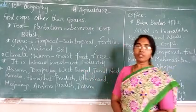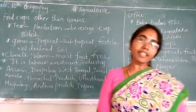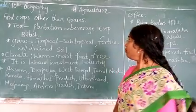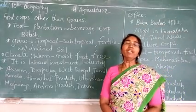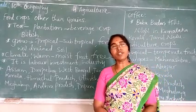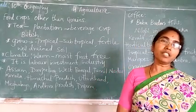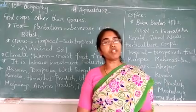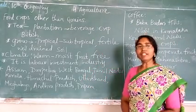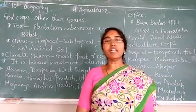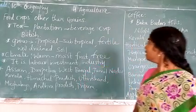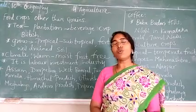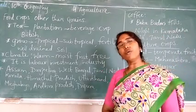Tea is known as a plantation crop as well as a beverage crop. It was introduced by the British in our country and has become one of the major crops in India. For growing tea, it requires tropical and sub-tropical regions with well-drained, very fertile land. Well-drained means moving water, and where such soil is present, tea will grow very well.